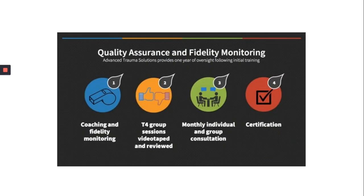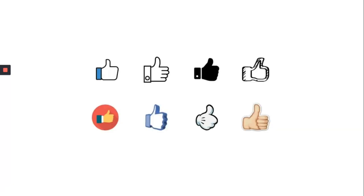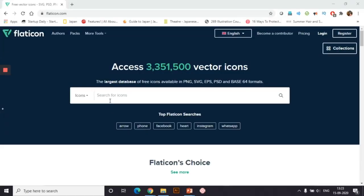This is a slightly better attempt but again, if you take a closer look, you'll notice the first icon is just an outline, the second one has an outline and some colors, the third one is a filled icon with two colors, and the fourth one is filled with just one color. So there are four icons with four different styles and it again breaks the unity. To ensure that all the icons are of the same style, you can use this resource called flaticon.com.